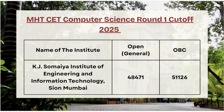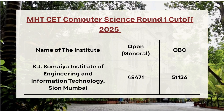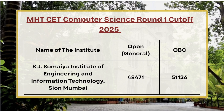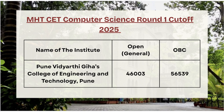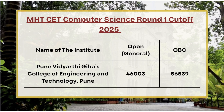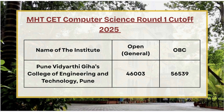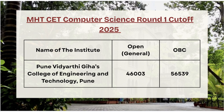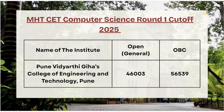Next in the list we have KJ Swamiya Institute of Engineering. For open category the cutoff rank is 48,471, and for OBC category the cutoff rank is 51,126. Next, Pune Vidyarthi College of Engineering — open category cutoff rank is 46,003, OBC cutoff rank is 56,539.